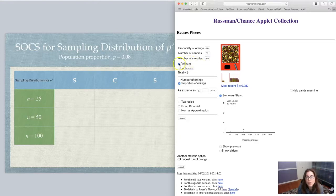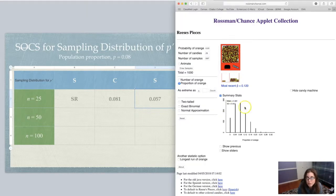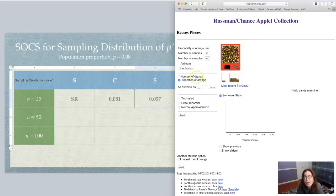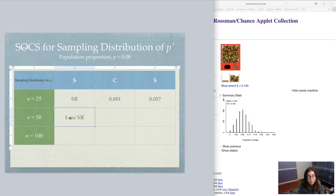Let me bump it to 997 more for a thousand samples total. Looking at the result, you can see this is skewed right — not approximately normal. Our mean was about 0.081 and standard deviation was 0.057. Now bumping up to n=50 with 1000 samples: it still looks a little skewed right to me, but less skewed than before. The mean was still 0.081 and standard deviation was 0.040.